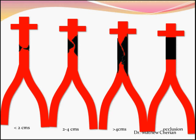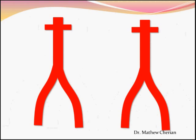This classification is important because category 1 — a focal stenosis — and category 2 — a stenosis of 2 to 4 cm with a normal aorta — are lesions which have good results with angioplasty and stenting.